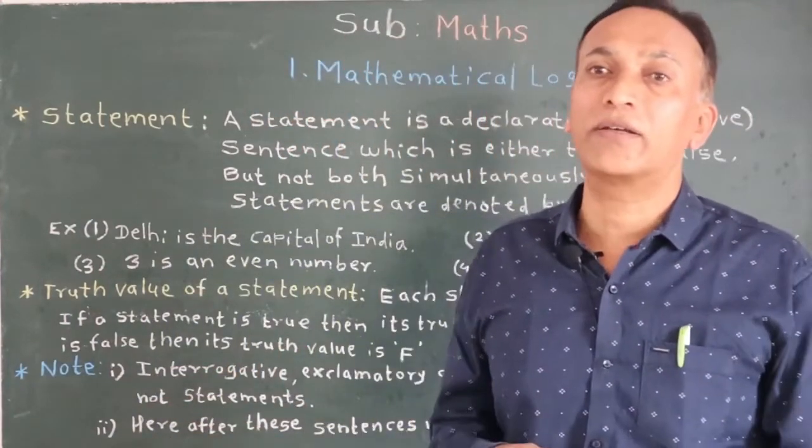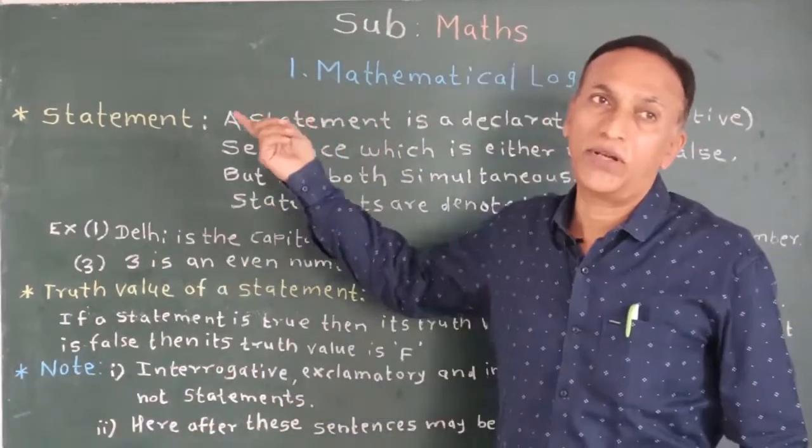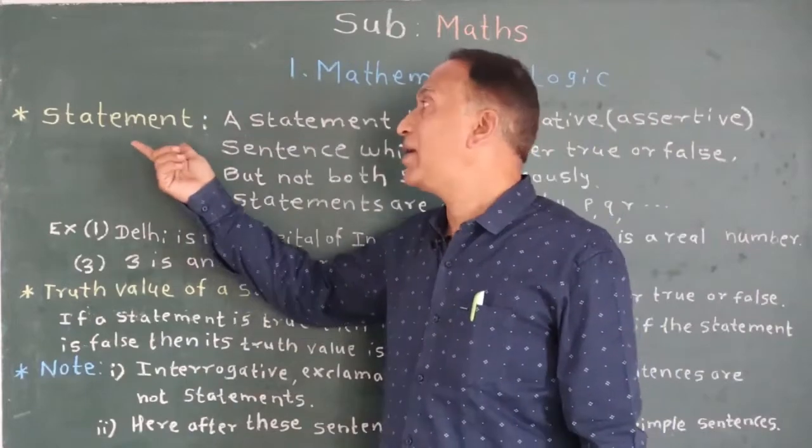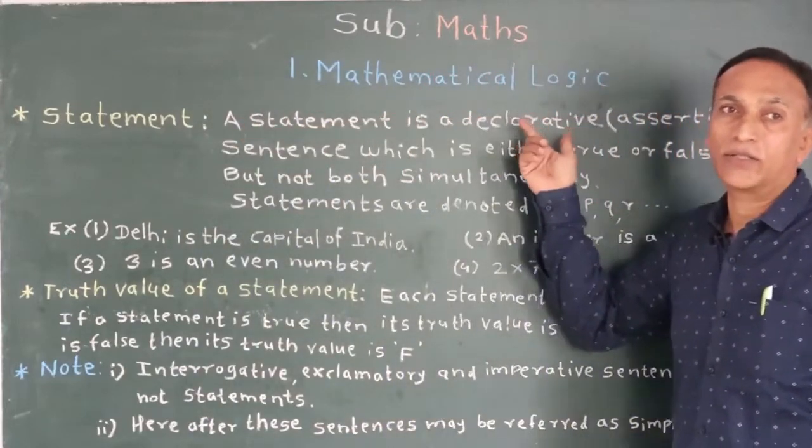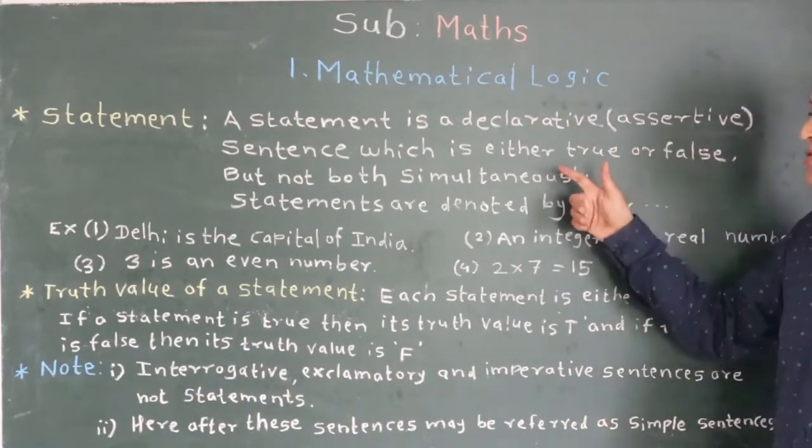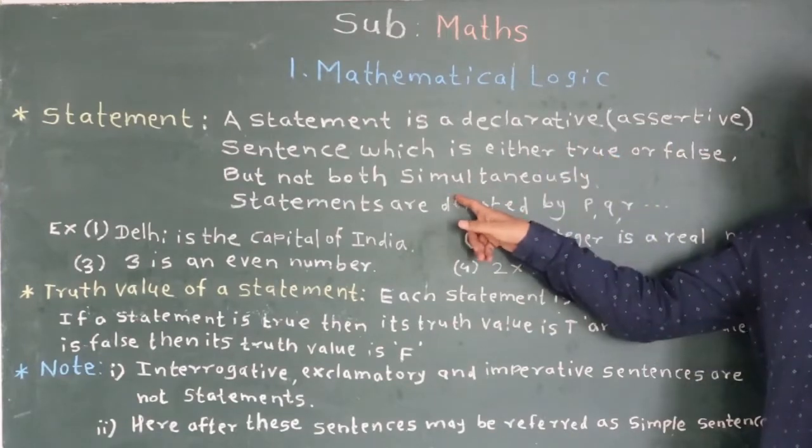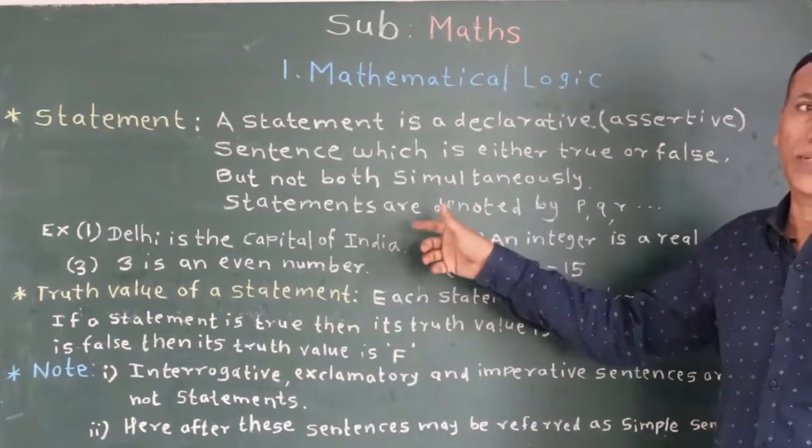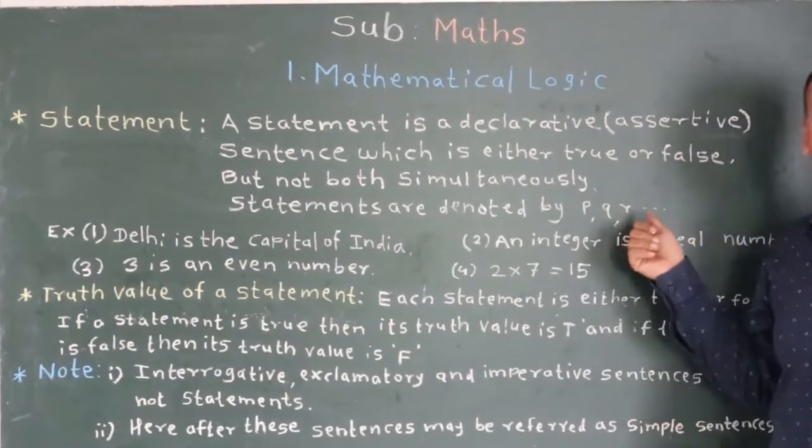So basically what is a statement. We will learn the definition of statement. A statement is a declarative sentence which is either true or false, but not both simultaneously. Statements are denoted by the small letters P, Q, R.